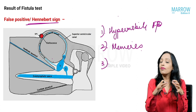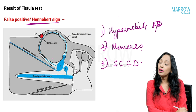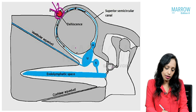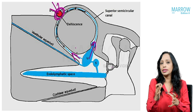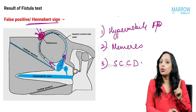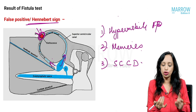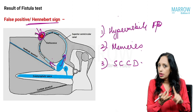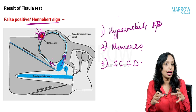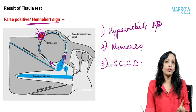Another condition is superior semicircular canal dehiscence — when the bone covering the superior semicircular canal is gaping. When pressure changes go inside, due to this abnormal opening, the superior semicircular canal is abnormally stimulated, leading to vertigo. So whenever a patient has vertigo on pressure changes, you will rule out: a fistula, Meniere's disease, superior semicircular canal dehiscence, and hypermobile footplate of stapes.